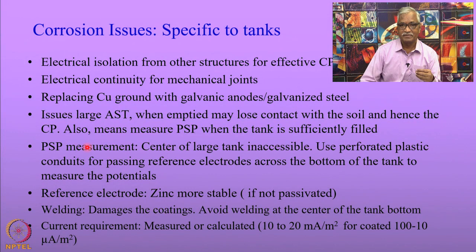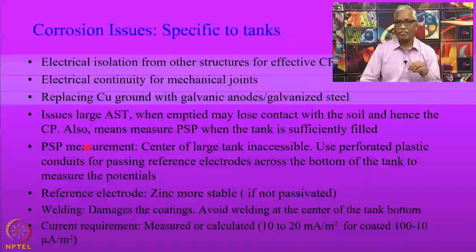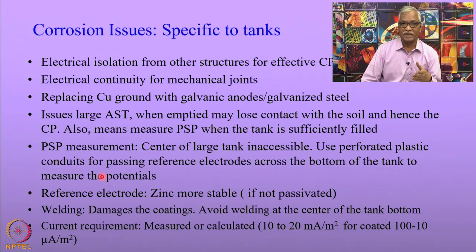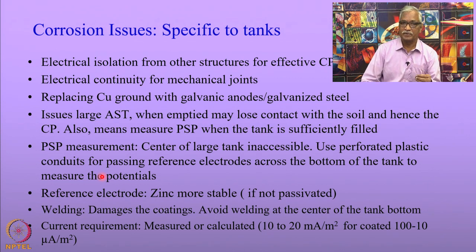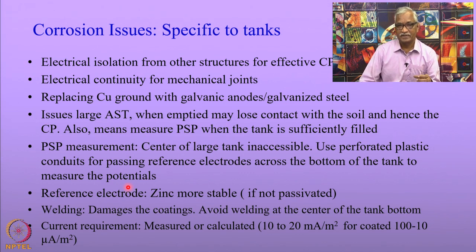In order to measure potentials at the center of the bottom of the tank, what is done is people use perforated plastic conduits through which the reference electrodes are passed across the bottom of the tank. It is also possible to use zinc electrodes, which are simply buried in the soil. Normal reference electrodes like copper-copper sulfate or silver-silver chloride have solutions that dry up over time, becoming damaged. Zinc electrodes can be used because they are buried in the soil, but the only condition is that the zinc should not be passivated — zinc sometimes gets passivated if you have carbonates in the soil.